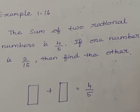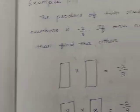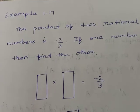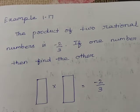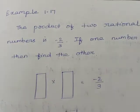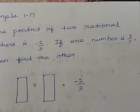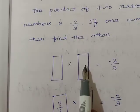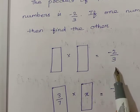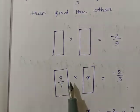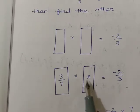This is an important sum — it is repeatedly asked in your examinations. Next, Example 1.17. Same model as the previous sum, but instead of sum of 2 rational numbers, here it is the product. The product of 2 rational numbers is minus 2 by 3. If one number is 3 by 7, then find the other. When you multiply any 2 rational numbers your answer is minus 2 by 3, and one number is 3 by 7.